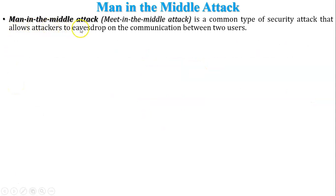The man-in-the-middle, or meet-in-the-middle attack, is a common type of security attack that allows an attacker to eavesdrop on the communication between two users. Whenever two users in the same network or different networks communicate with each other, an attacker or hacker can read and modify those messages during the communication.